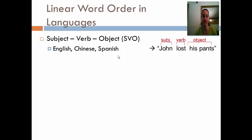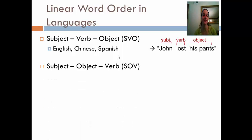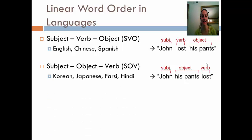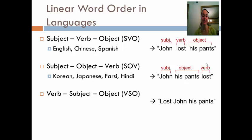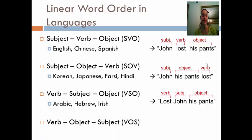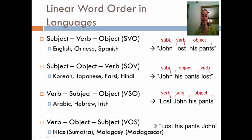Beyond SVO, we also have subject-object-verb order — 'John his pants lost' — common in Korean, Japanese, Farsi, and Hindi. Verb-subject-object — 'Lost John his pants' — is common in Arabic, Hebrew, and Irish (which speaks Gaelic). And verb-object-subject is much less common, used in some languages such as Nyас and Malagasy, and would look like 'Lost his pants, John.'